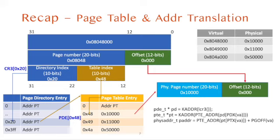Because this address translation requires two additional memory accesses, it can be cached by the TLB — the Translation Lookaside Buffer — to speed up address translation.